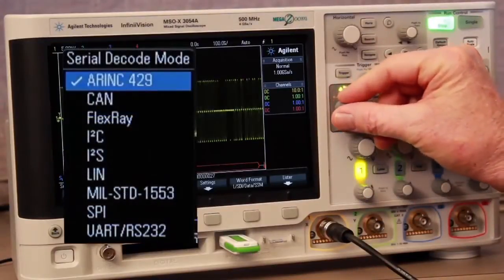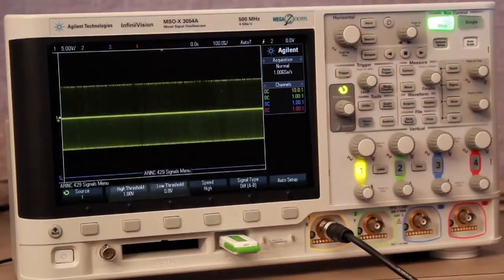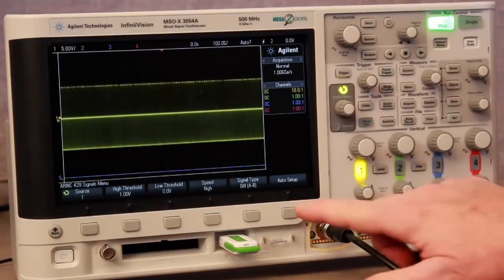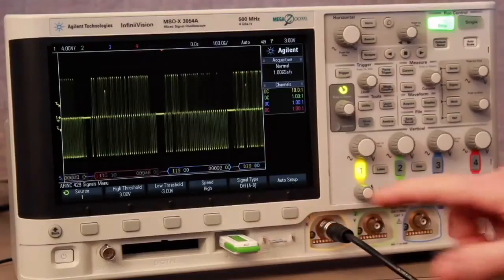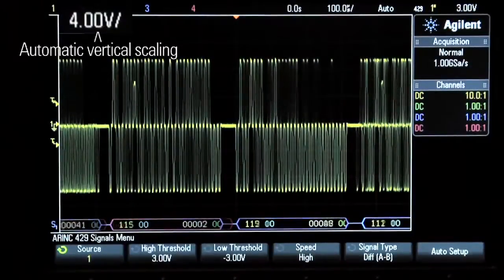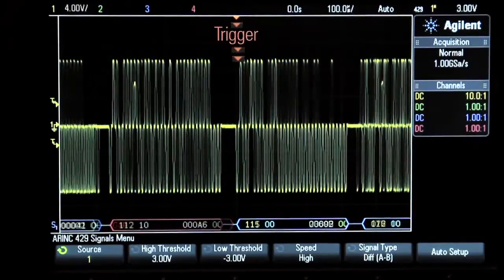Then press the signal soft key. In this menu, we can set the upper and lower threshold levels, but if we press the auto setup soft key, the scope will automatically set the threshold levels for us, as well as set the vertical scaling factors and establish triggering on the start of any word.